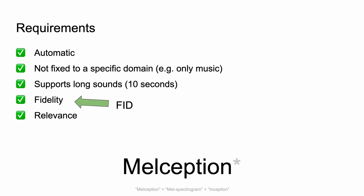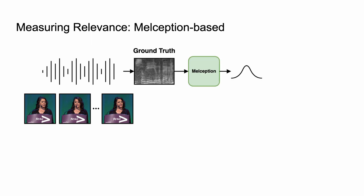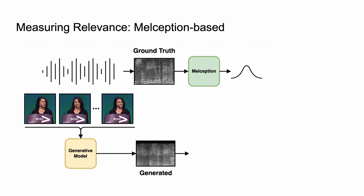For fidelity evaluation, we will use Fréchet Inception Distance. However, for relevance, we need some more insights. Consider a video and its corresponding original audio track. We are going to take this audio, extract a spectrogram, and pass it through the pre-trained classifier. The classifier will output a distribution over the classes. At the same time, we will take the visual frames and generate a relevant spectrogram, which will go to the same classifier.